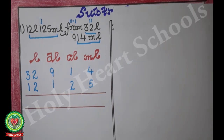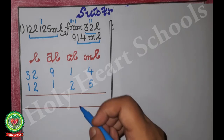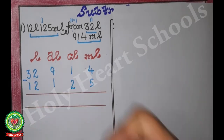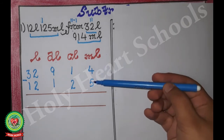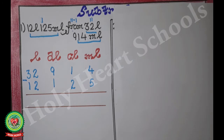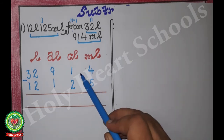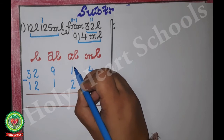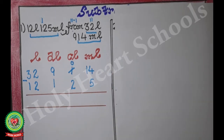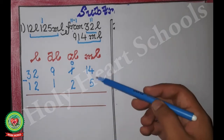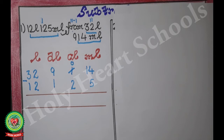Now we have arranged the numbers. We write the minus sign. Next step is subtraction. Can I subtract 5 from 4? No, because 4 is smaller and 5 is greater. So this 4 will borrow from 1 — 1 becomes 0 and 4 becomes 14. Now 14 minus 5 is 9.